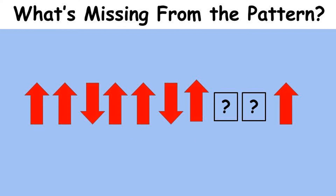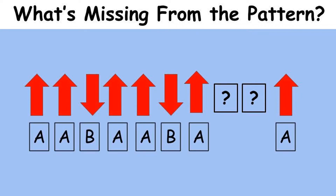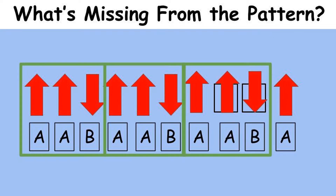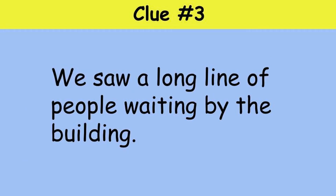What's the missing pattern on this slide? I notice first of all that they're all the same color, but when I look a little bit closer, I notice that some of the arrows go up and some of the arrows go down. Pause the video and see if you can figure out the missing pattern. I decided to change my pictures into letters: each arrow going up is an A, each arrow going down is a B. So it looks like I have an AAB pattern. If you said the first question mark was an arrow going up and the second question mark was an arrow going down, then you are correct. Since you got that clue correct, you get clue number three: we saw a long line of people waiting by the building.